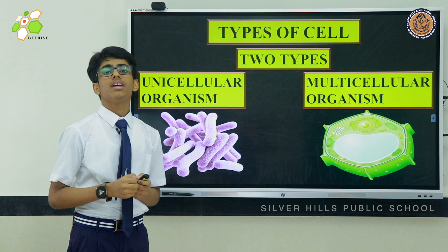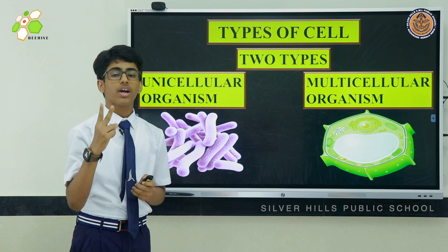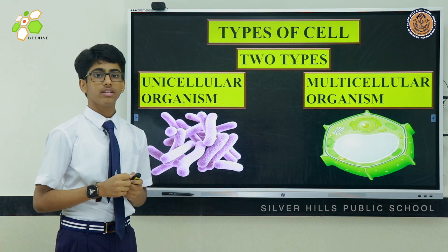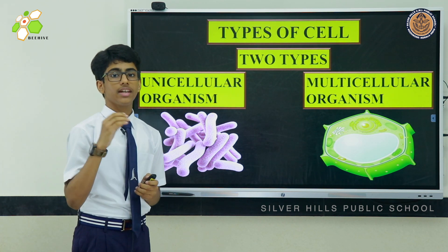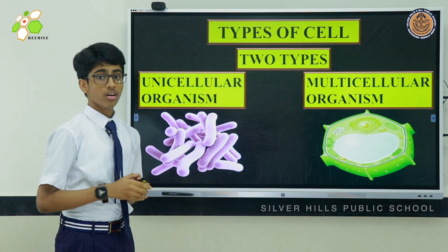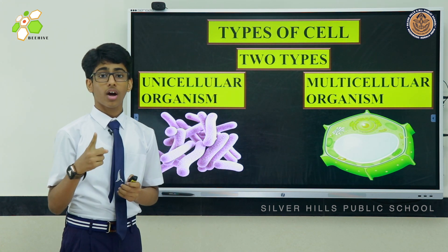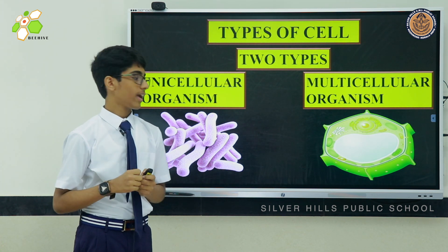Types of cell. Cells are classified into two types on the basis of the number of cells present in an organism: unicellular organisms and multicellular organisms.